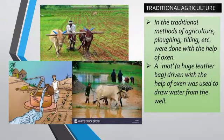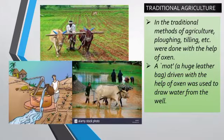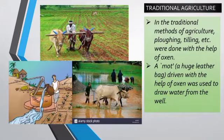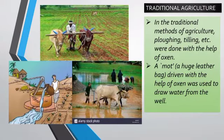Agriculture in our country has been followed for many years. In the past, traditional methods of agriculture were used. In the traditional method, ploughing and tilling were done with the help of oxen — animals were used rather than machines. A moat, which is a huge leather bag driven by oxen, was used to draw water from the well. These oxen played an important part in the farmer's life: tilling the land, ploughing, and supplying water to the farm were all done by the farmer with the help of animals.